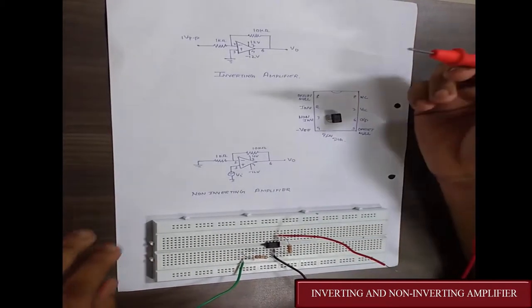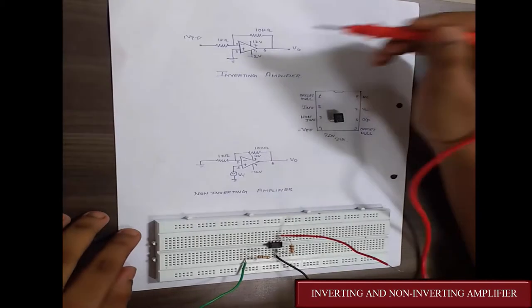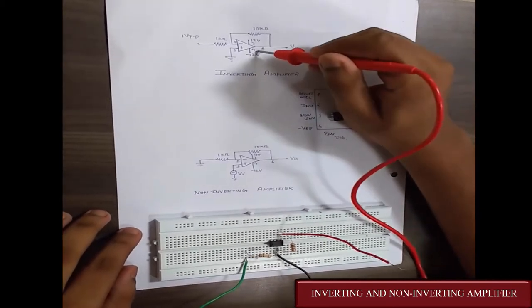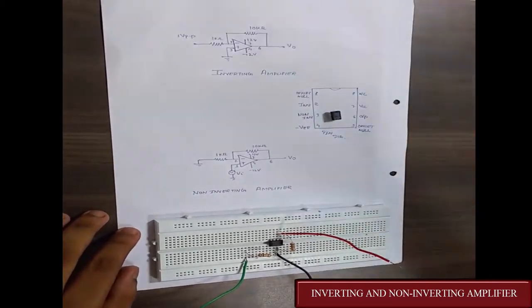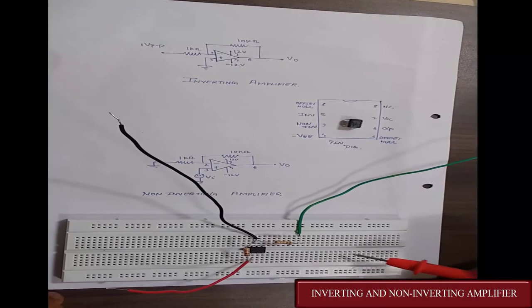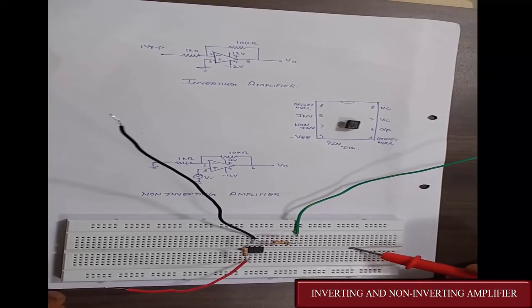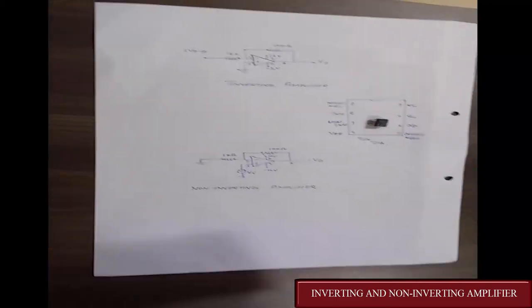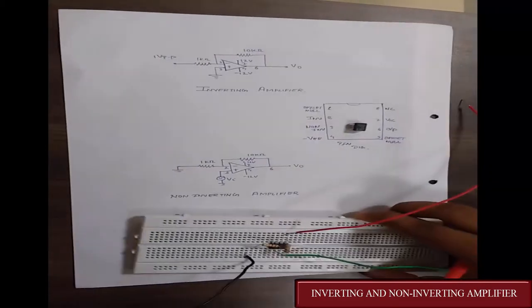The voltages are applied at pin 7 and pin 4. That was the implementation of the inverting amplifier. Now we are going to discuss the implementation of the non-inverting amplifier.